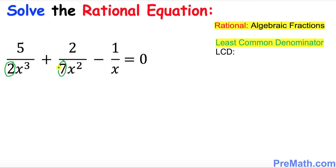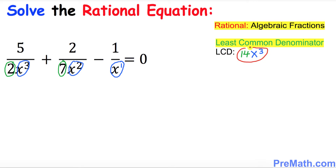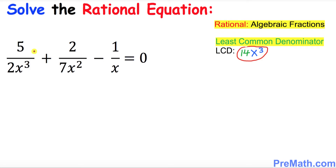So the least common denominator, or least common multiple, for these numbers is going to be 14. Put down 14 for the coefficients. Now focus on the x variables — the highest power here is x³, here is x², and here is simply x, which is x¹. The highest degree is 3, so put down x³. Thus our least common denominator turns out to be 14x³.